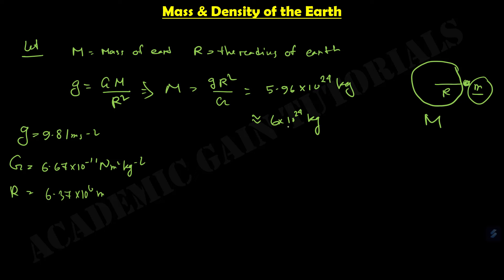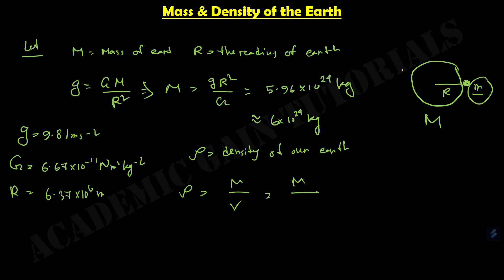This is the mass of our Earth. Now we have to find out the density. The density of the Earth is rho. We know rho equals mass divided by volume. And since Earth is spherical in geometrical shape, for the volume V we can use the formula for spherical volume, which is 4 by 3 pi R cubed.